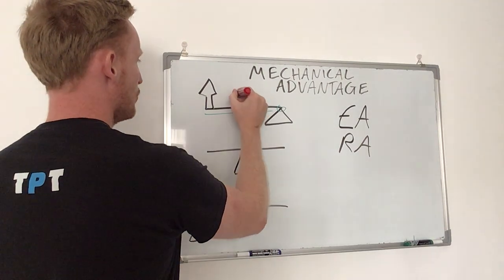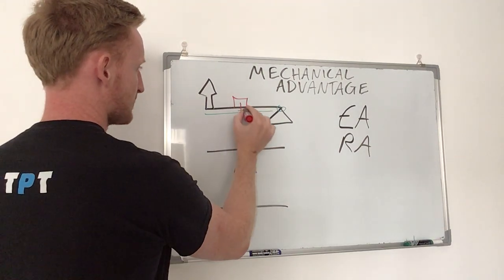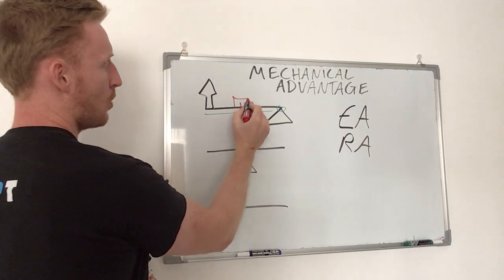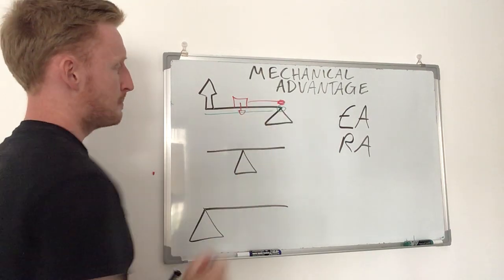The resistance arm, on the other hand, is the distance from where the load is at the center of that mass. It's the distance from the load to the fulcrum point or to the pivot point.